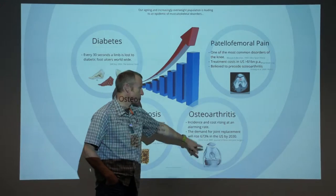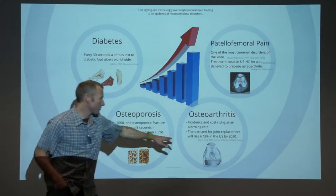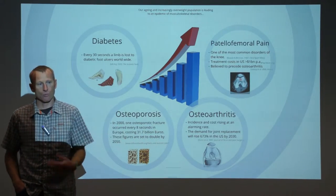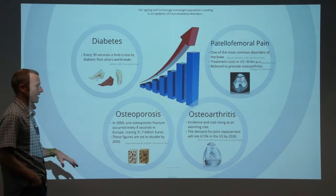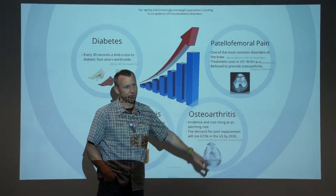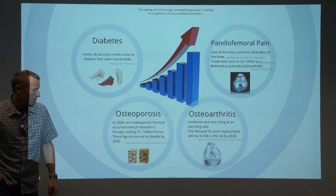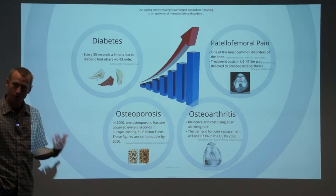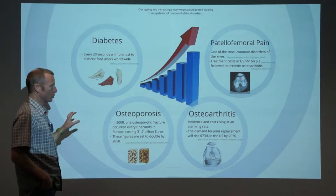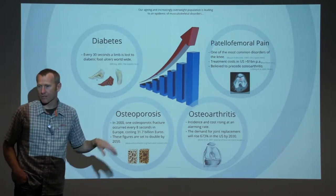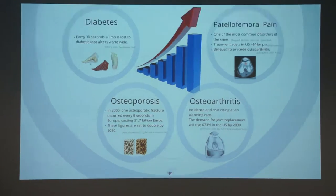Joint replacements in the United States are going to increase almost sevenfold in the next 15 years, and we can't sustain this under the current medical model. We just can't afford a sevenfold increase in joint replacements. We need solutions, and those solutions need to be more on the preventative side as much as possible, as opposed to trying to fix these problems after the fact.